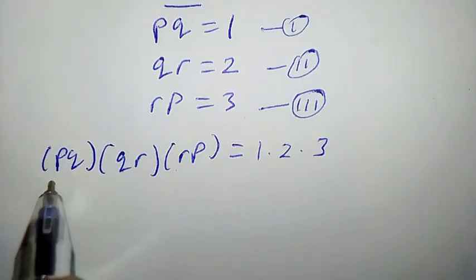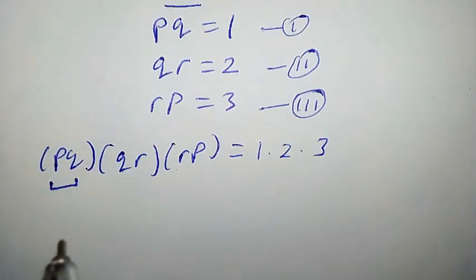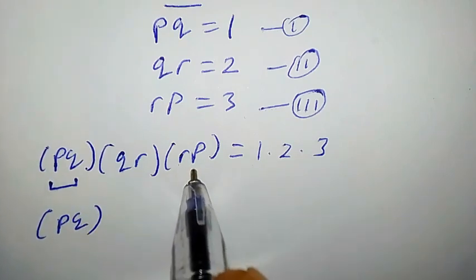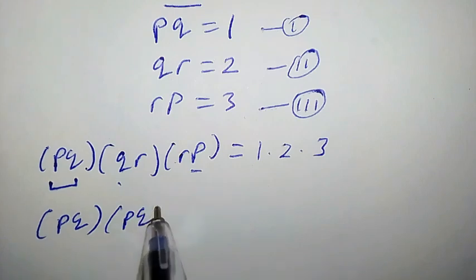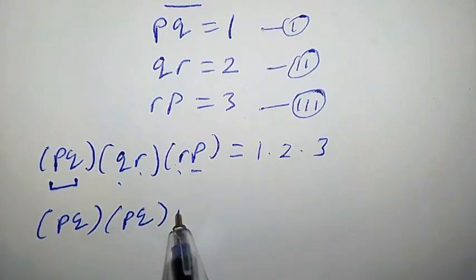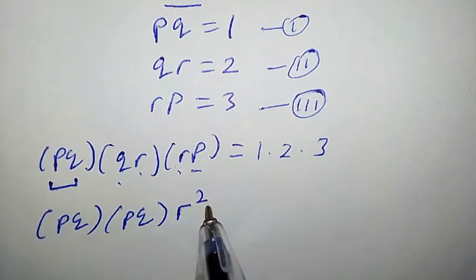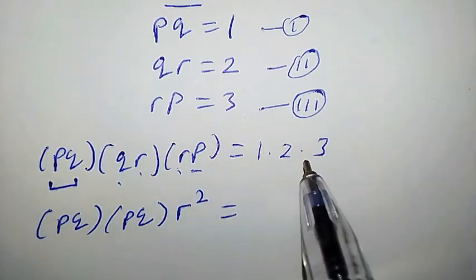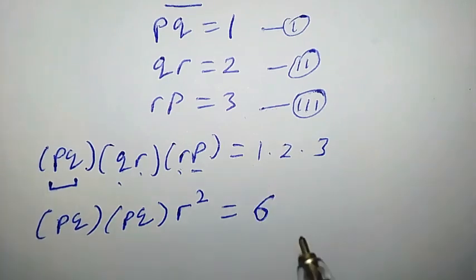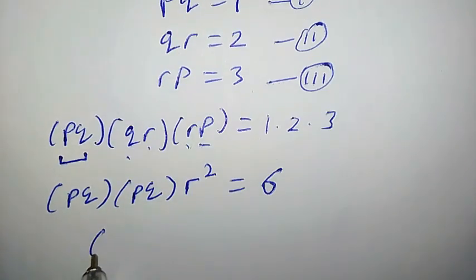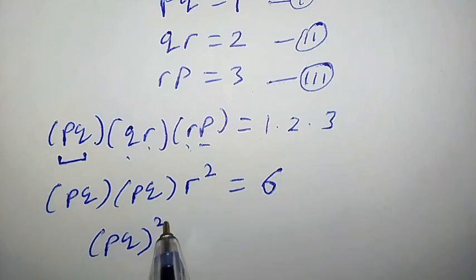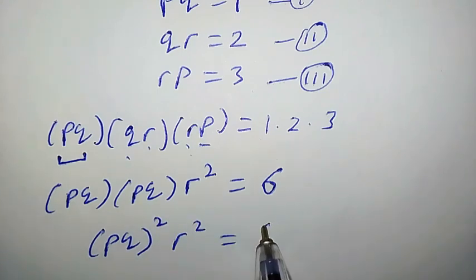Now let us simplify the left-hand side. PQ times QR times RP gives us P times Q times Q times R times R times P, which is PQ squared times R squared, equal to 1 times 2 times 3, that is simply 6. So PQR squared equals 6.